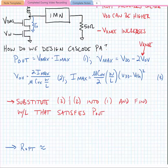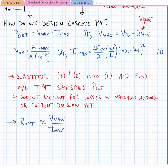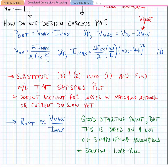Now we're going to substitute equations 3 and 2 back into equation 1 and we can find a W over L that would satisfy the required output. It's important to note that right now we're not accounting for losses in the matching network or the current division yet, so it's important that when we go through this process we might need to add a bit of a correction factor. The R_opt that we need from our impedance matching network is approximately equal to V_max over I_max. This is a fairly good starting point and it will get us reasonable performance in a power amplifier in a first pass, but it's based on a lot of simplifying assumptions.